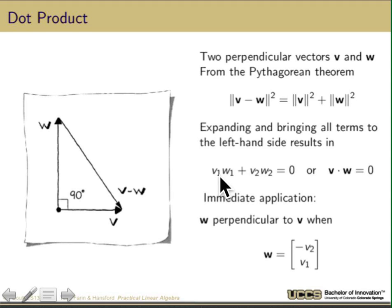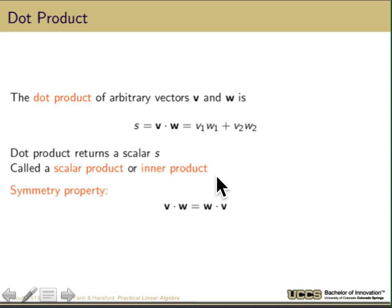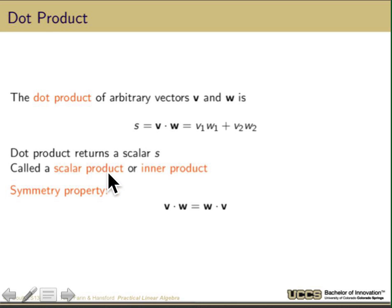In general, the dot product of two arbitrary vectors V and W is V1 times W1 plus V2 times W2 — the same formula. It returns a scalar S, which is why it's also called the scalar product, or the inner product. By looking at this formula, it's easy to verify that V dot W equals W dot V — it's a symmetric operator. If you don't see that, work out the algebra and check it yourself.